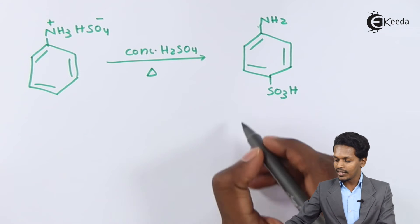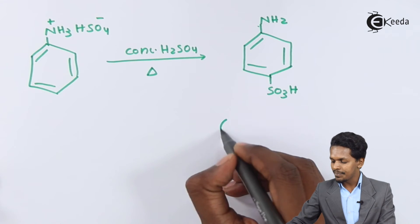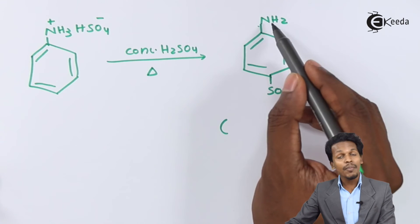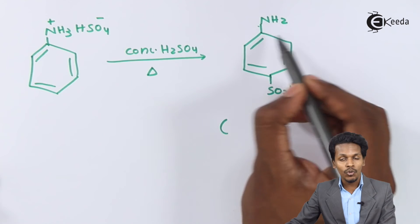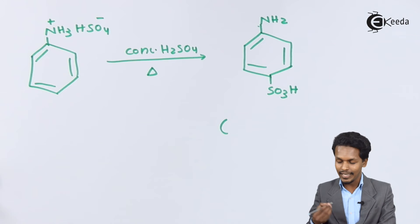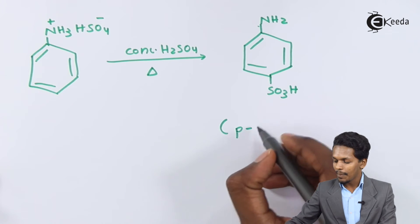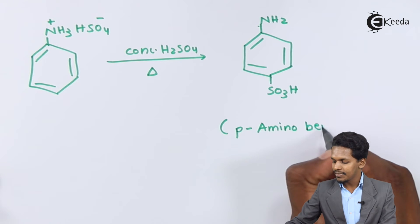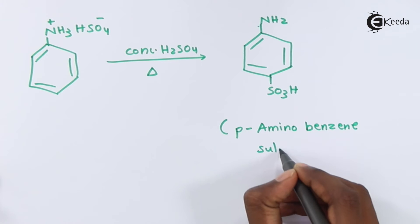The product that we have obtained over here is benzene sulfonic acid, but on the para position where we could find this amino group. That's the reason the name of this product is para amino benzene sulfonic acid.